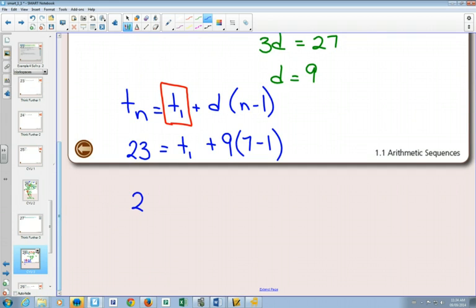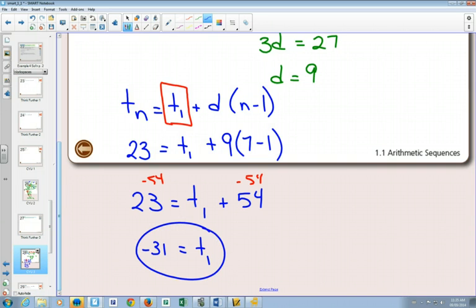Now the only thing we don't know here is the t₁. So 23 equals t₁. Nine times six is 54. I'd subtract 54 on both sides. And I would get negative 31 that way as well.